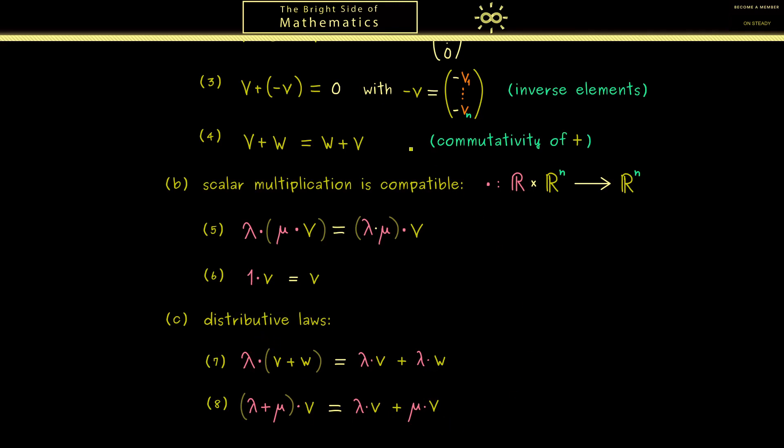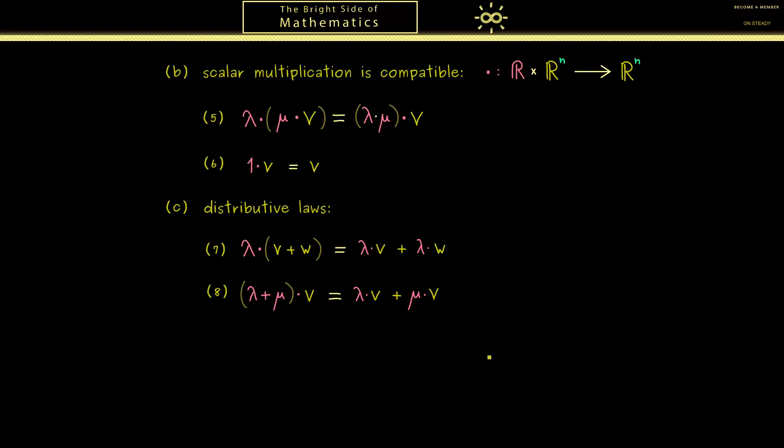In summary, you see these are the eight properties R^n as a vector space satisfies. And indeed, these properties will help us to define abstract vector spaces later, so this should not surprise you. In the end, a vector space should be something that satisfies all these eight rules.